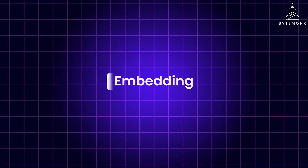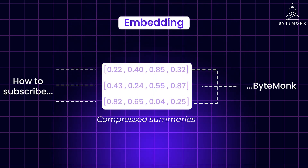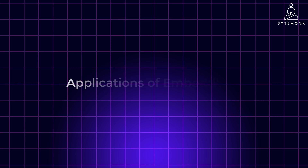Remember how embeddings unlock prediction and generation from the last video? Embeddings are numerical representations of text or data points that capture their meaning and relationships. Think of them as compressed summaries of complex information. While embeddings play a significant role in predicting or generating output in AI models, embeddings alone can be extremely valuable in many applications even without the generative aspect. Let's start with the most common application — semantic search.